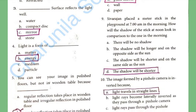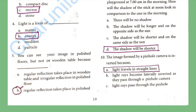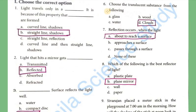Fifth question: You can see your image in polished clothes but not in a wooden table, because regular reflection takes place in polished surfaces. Sixth question: Choose a translucent substance from the following — answer is clouds.